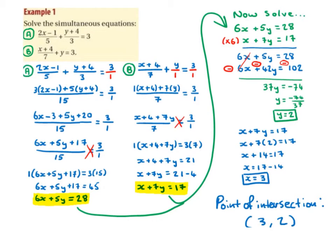Taking the second equation, changing y to y over 1 and 3 to 3 over 1, we simplify the left-hand side by adding the two fractions. With denominators 7 and 1, the common denominator is 7. 7 goes into 7 once, and 1 goes into 7 seven times. Expanding: 1 by x is x, 1 by 4 is 4, 7 by y is 7y — over 7, equal to 3 over 1. Cross multiplying gives x plus 4 plus 7y equals 21, and bringing the 4 across gives x plus 7y equals 17.